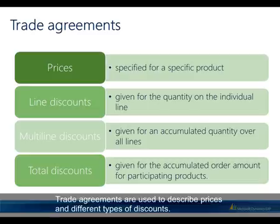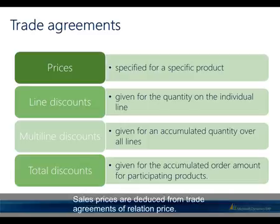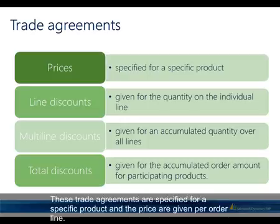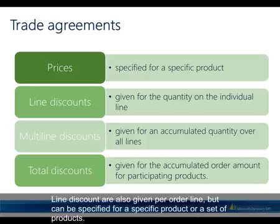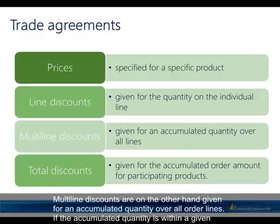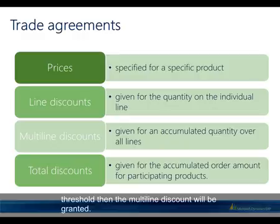Trade agreements are used to describe prices and different types of discounts. Sales prices are deduced from trade agreements of relation price, specified for a specific product with the price given per order line. Line discounts are also given per order line but can be specified for a specific product or a set of products. Multi-line discounts are given for an accumulated quantity over all order lines; if the accumulated quantity is within a given threshold, the multi-line discount will be granted.